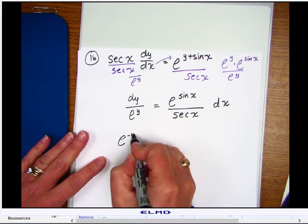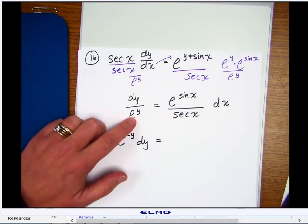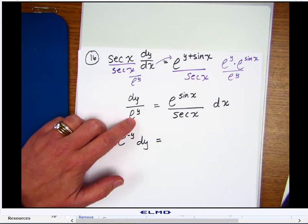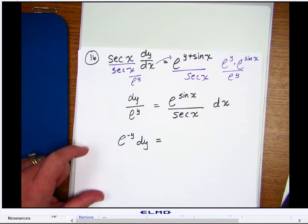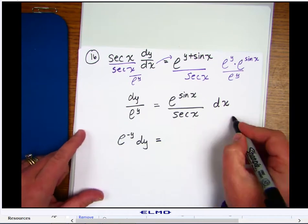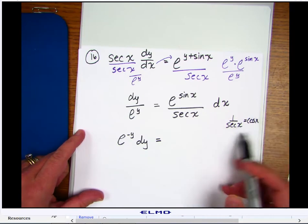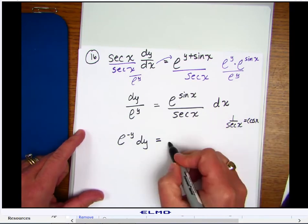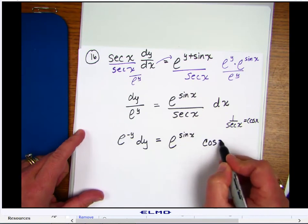So here, I'm going to write this as e to the minus y dy. All I did was bring my e to the y out of the denominator by changing the sign on the exponent. And here, one over secant of x is actually equal to the cosine of x. Again, that's that identity that you need to know. So here, we would have e to the sine of x cosine x dx.